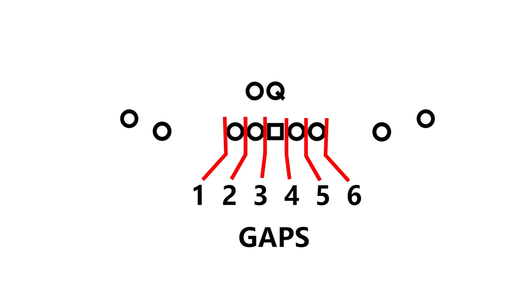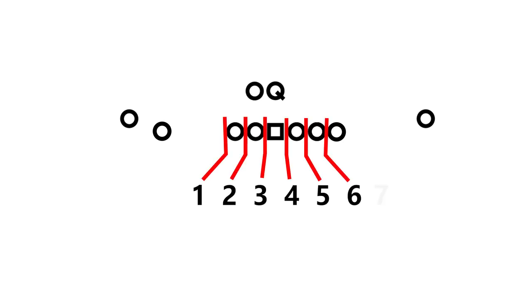In order for a defense to adequately defend the run, they need to have one guy that is responsible for each gap. So for five downed linemen, they need six guys for their run fits. So what happens when you bring in a tight end? As you can see, we added another blocker at the line of scrimmage, but more importantly, we added another gap for the defense to defend. This means an additional defender for the defense who has to be concerned with stopping the run.